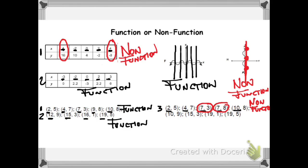In our fourth example, I want you to notice that we have x values of 10, 15, 19, and 19. Again, we have a repeated x value, so our focus goes straight there. The number x=19 is paired first with 1, then with 5. Same x value, different y values — that will make it a non-function.